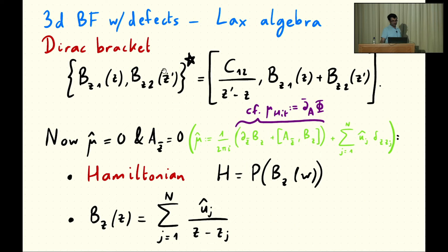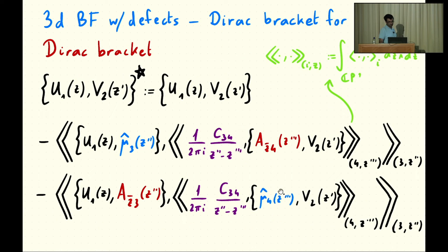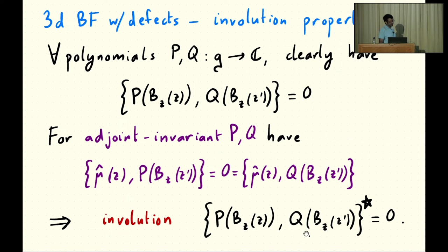One last thing: we know from the Lax bracket that adjoint invariant polynomials of B commute with each other, and we can see this nicely from the Hamiltonian analysis. Because B_Z commutes with itself, the Poisson bracket of polynomial P of B_Z commutes with polynomial Q of B_Z. Moreover, because P is adjoint invariant and mu-hat generates the gauge transformation under which B_Z transforms by conjugation, the Poisson bracket of mu-hat with P of B_Z is zero, and similarly for Q. This means those terms in the Dirac bracket formula vanish, giving you for free that the Dirac brackets of these two polynomials are zero — the involution property derived within the Hamiltonian construction.